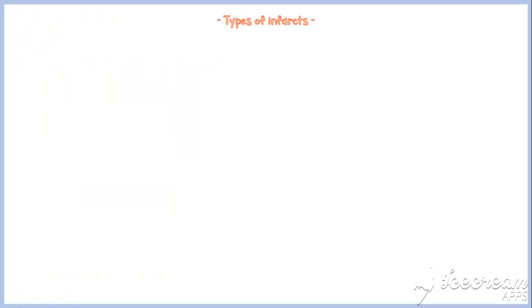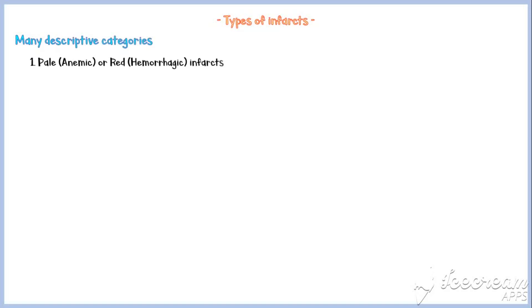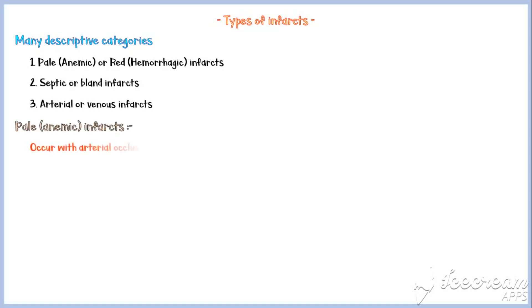Now let's discuss the different types of infarcts. They can be categorized into many types — predominantly into pale or red infarcts according to their morphology, and also into septic or bland infarcts, and arterial or venous infarcts. Pale or anemic infarcts occur with arterial occlusions in solid organs such as kidneys, heart, and spleen, which have end arterial supply.